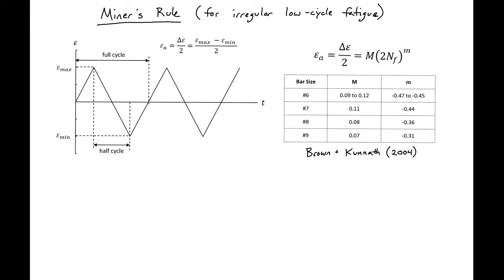We've looked at low cycle fatigue behavior if we have a regular cycle of strain from a consistent max to a consistent min. And we saw that we could estimate the number of half cycles using this expression proposed by Collins and Mason.